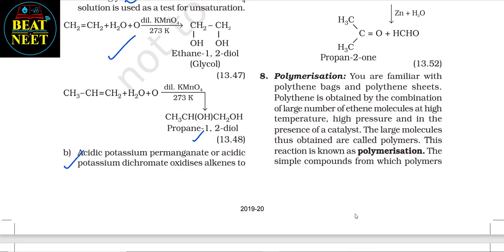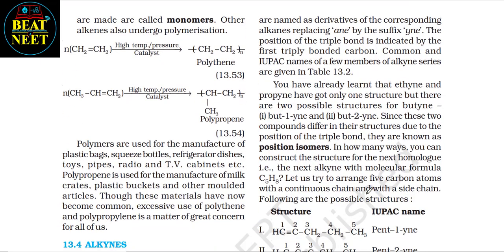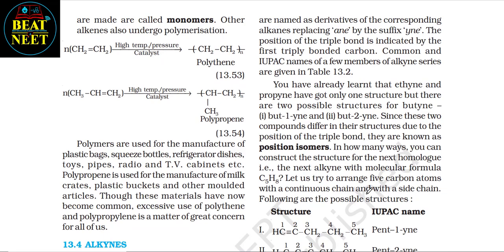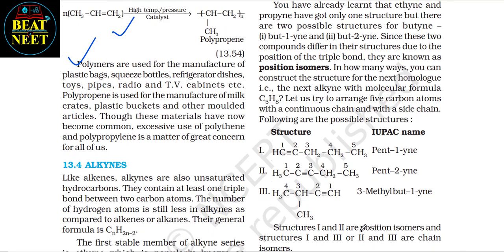Eighth — polymerization: polythene is obtained by the combination of a large number of ethene molecules at high temperature, high pressure, and in the presence of a catalyst. The large molecules obtained are called polymers; this reaction is known as polymerization. The simple compounds from which polymers are made are called monomers. Polymers are used for the manufacture of plastic bags, squeeze bottles, refrigerator dishes, toys, pipes, radio and TV cabinets, etc. Polypropene is used for milk crates, plastic buckets, and other molded articles. Excessive use of polythene and polypropylene is a matter of great environmental concern.